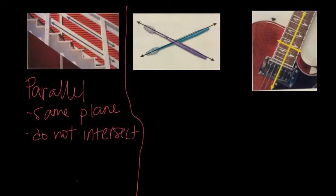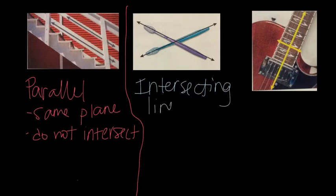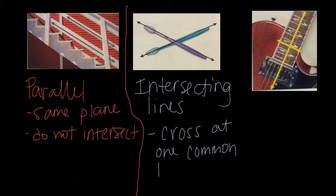Okay, next we have... So these lines, they cross. Do they cross at a 90 degree angle? No. So we would just say these are intersecting lines. And we know that they are intersecting because they cross at one common point. So we could just say cross at one common point.